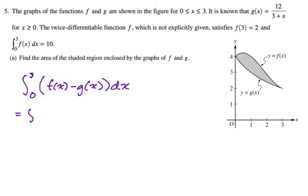We're going to break this up into two different integrals, 0 to 3 of f of x dx, and then minus the integral from 0 to 3 of g of x, which is 12 over 3 plus x dx. I prefer x plus 3, but I went with it. If you look at the problem, they say that the integral from 0 to 3 of f of x dx is 10, so we already know that this is 10.